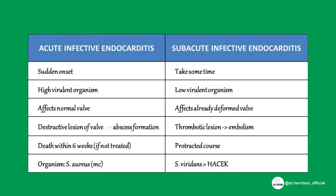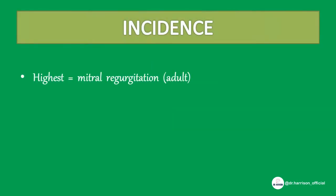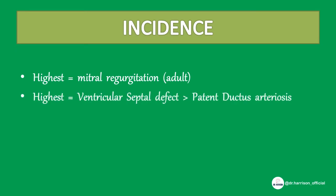Now let's see the difference between two important types of endocarditis: acute infective endocarditis and sub-acute infective endocarditis. Incidence of endocarditis is highest in mitral regurgitation for adults and ventricular septal defect for children, and least in atrial septal defect.